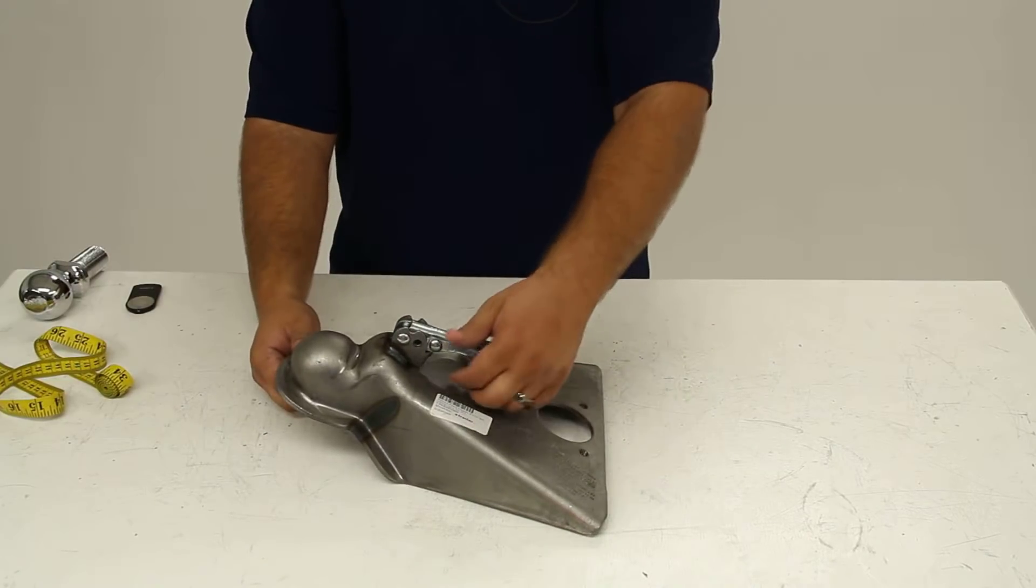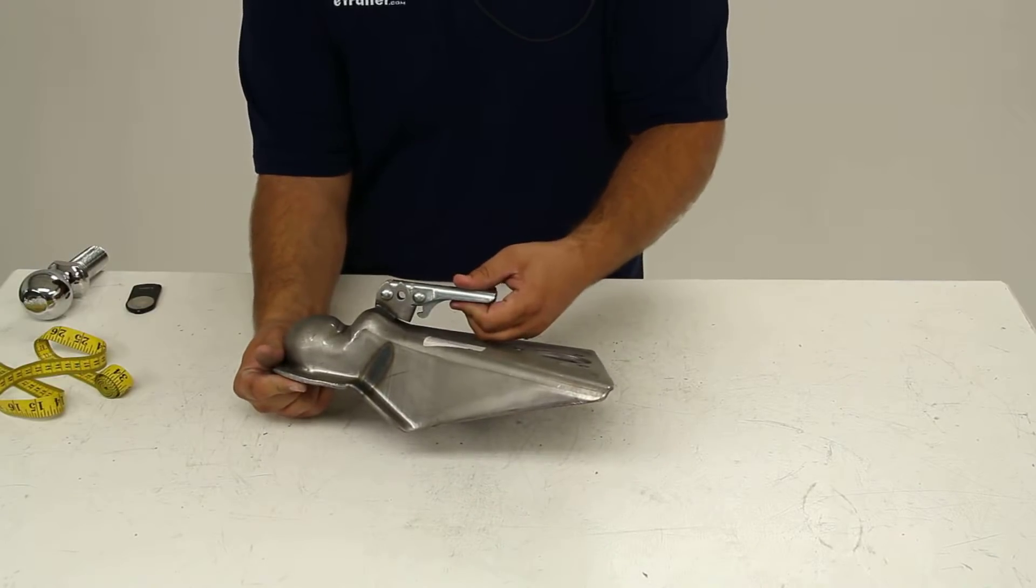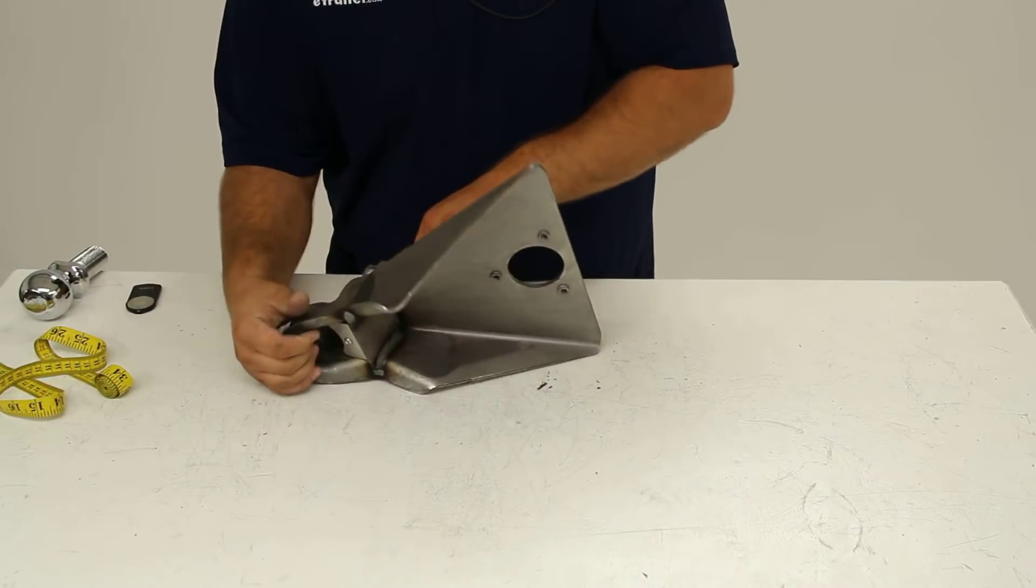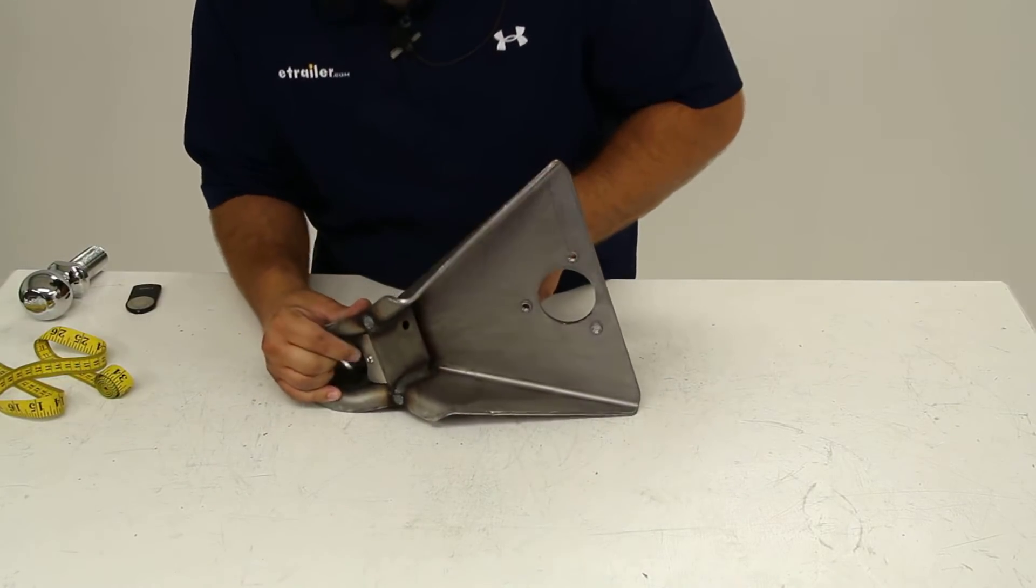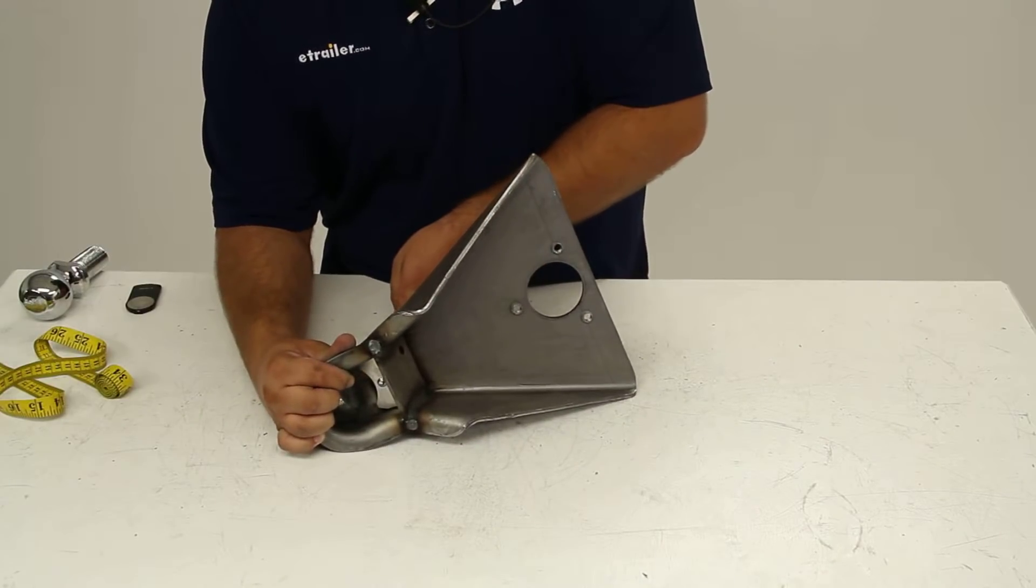The latch mechanism works by pulling this release trigger on the bottom side of the latch and lifting the handle up. As you do this, the wedge inside our coupler is pulled up and away from the trailer ball releasing it.